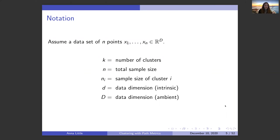Just a little bit of notation used throughout the talk: n is the number of data points and sample size x₁ through xₙ; k is the number of clusters; nᵢ is the sample size of cluster i; little d is the intrinsic dimension; and big D is the ambient dimension of the data.